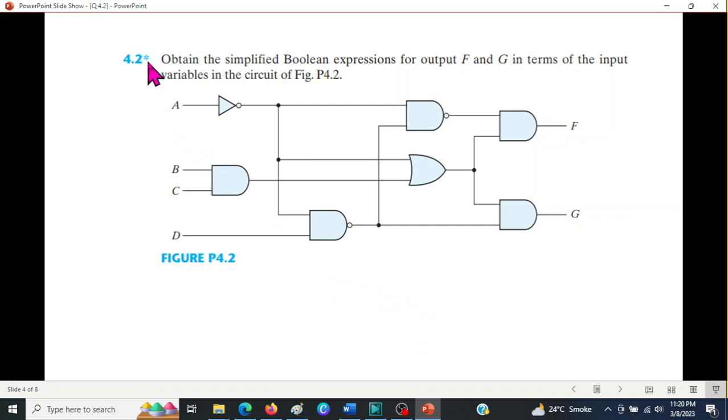Now this is the question and a challenging question. So let's solve. Obtain the simplified Boolean expression for output F and G in terms of the input variables A, B, C, D. And we have to find the value of F and G in terms of these.